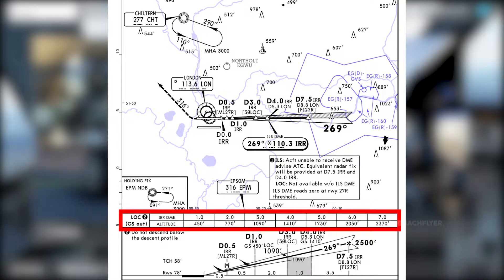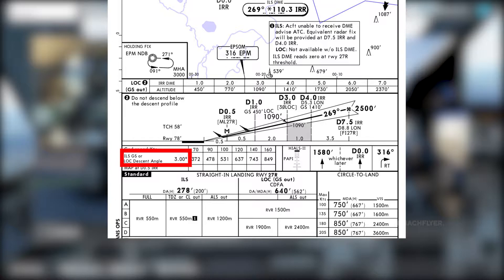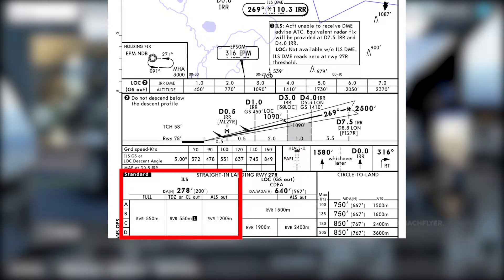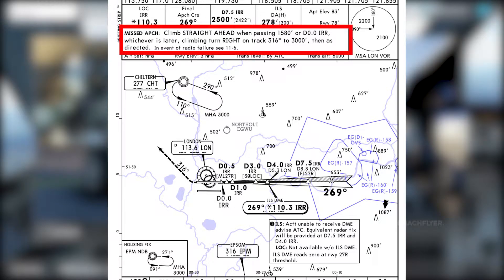You have the localizer altitude reference in case you are doing a partial managed approach, or using a selected flight path angle. Cross-check the altitude with respect to the distance from the runway, and do not descend below the descent profile. We have a glideslope angle of 3 degrees for this ILS. High intensity approach lighting system category 2 is installed. The minima are 278 feet DA, with an RVR requirement of 550 meters for a full approach lighting system.